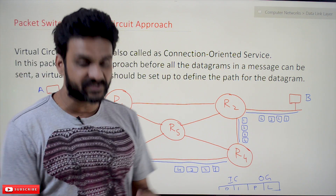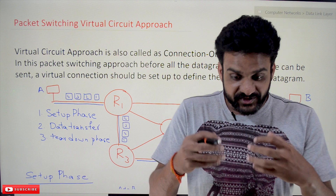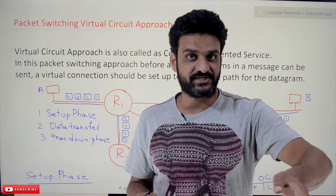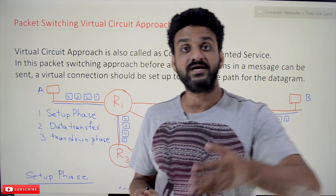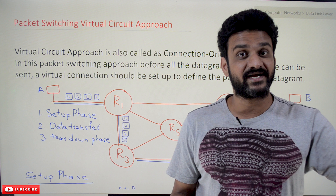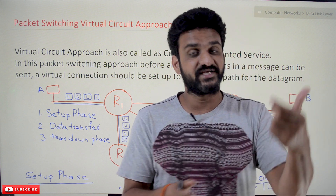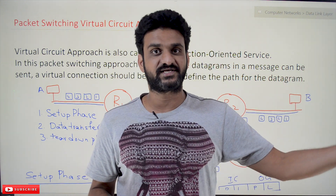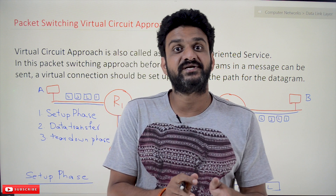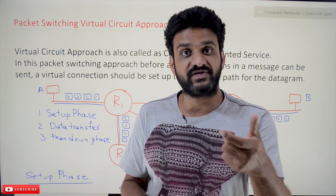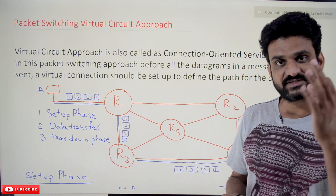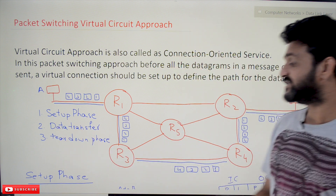The switching — meaning the transfer of packets — is done once the connection is established. Before transferring data into the network, the connection has to be established. All the packets that the sender is sending (a single message gets divided into packets) will be transmitted in a specific virtual circuit. That circuit must be established before transferring the data. The entire process of virtual circuit happens in three phases: setup phase, data transfer phase, and tear down phase.